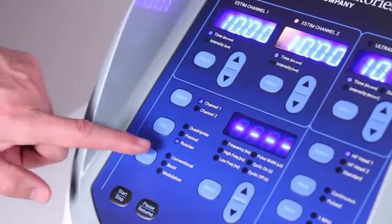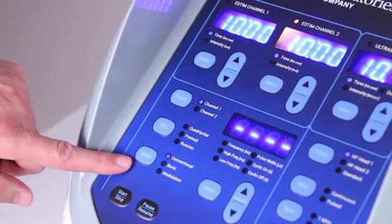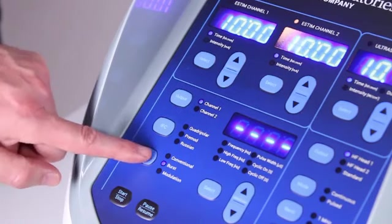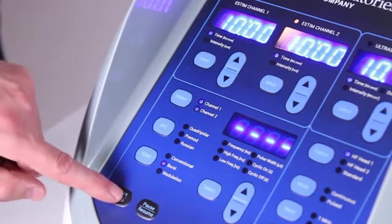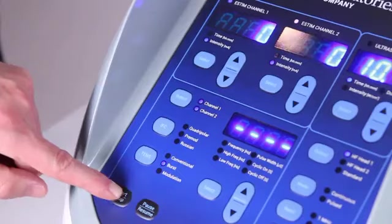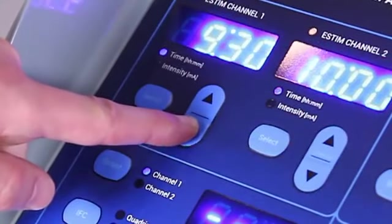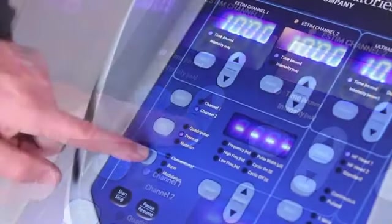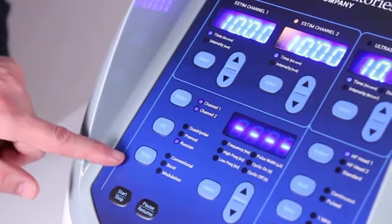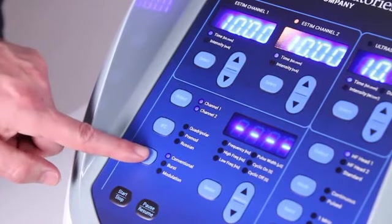Press the TENS button. Select conventional, burst, or modulation settings. Press start to begin the treatment. Adjust time and intensity as needed. TENS may also be used on channel one and channel two with different settings at the same time.